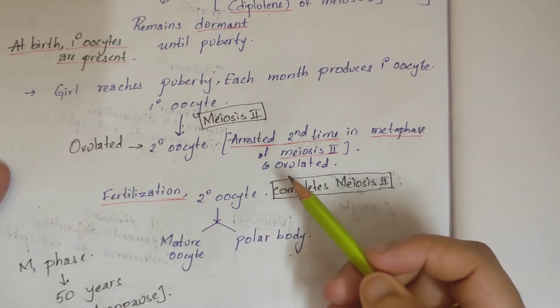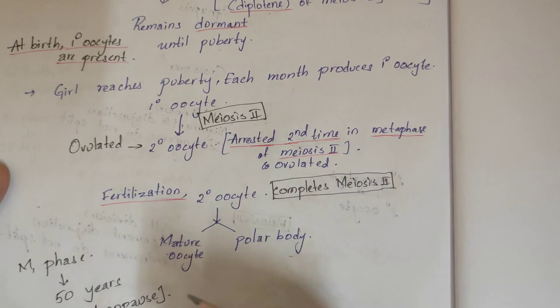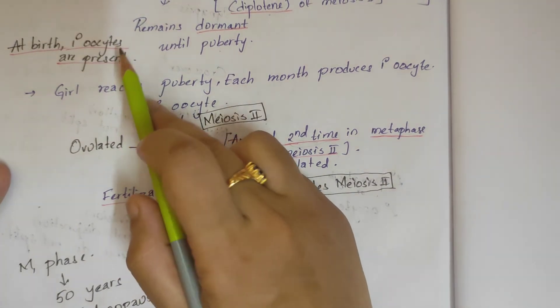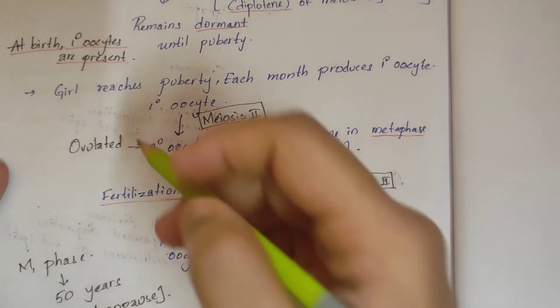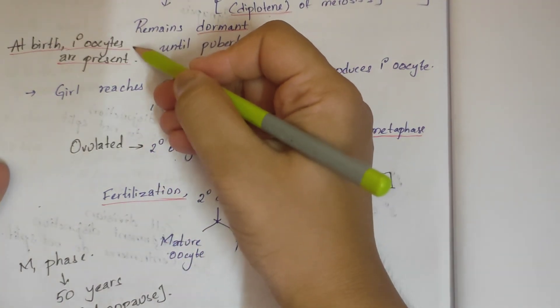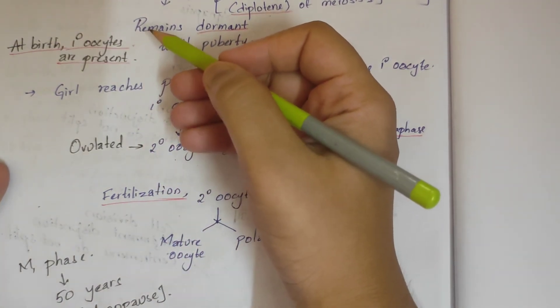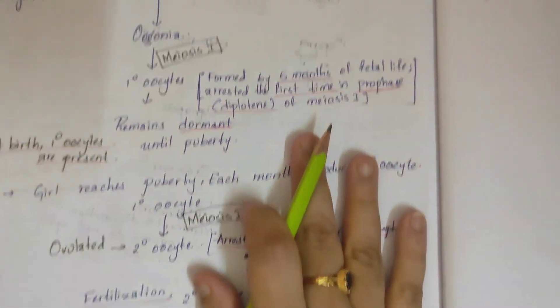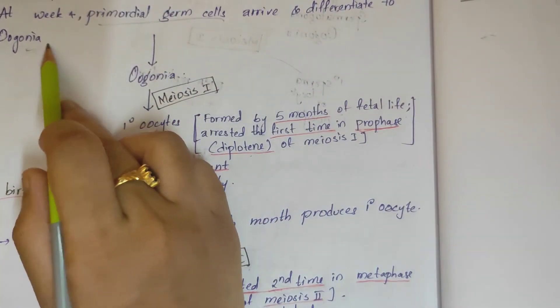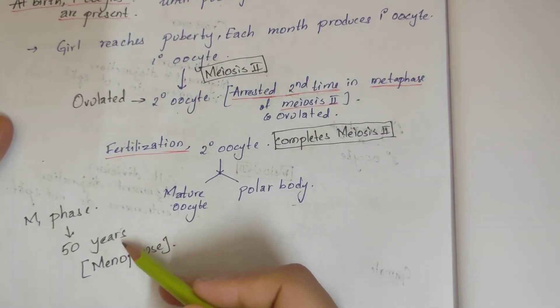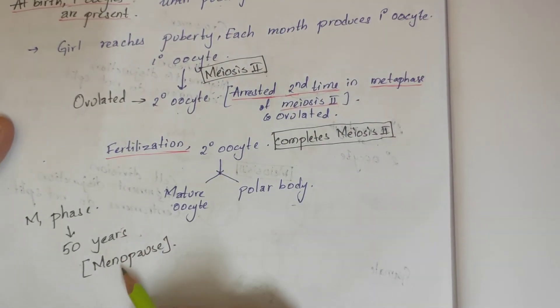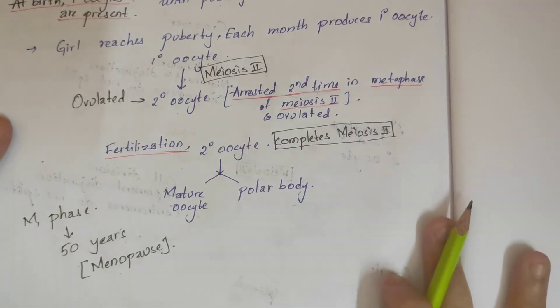Previously in spermatogenesis, we said that at birth in testis there are only primordial germ cells. But here, there are primary oocytes because these undergo differentiation to form the oogonia. The M1 phase takes place for 50 years - that is, until menopause, as we know.